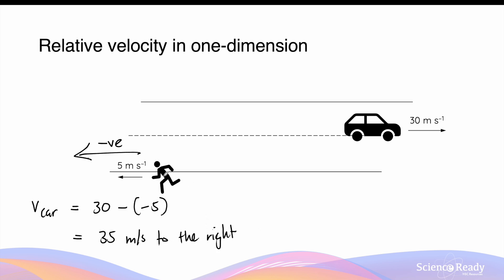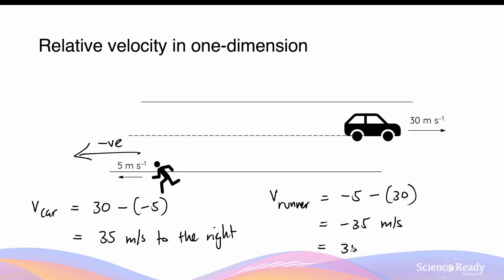In other words, when the runner is running in the opposite direction to the car's motion, the car will appear to be travelling faster at 35 meters per second to the right. Conversely, the velocity of the runner relative to the car will be its velocity, which is minus 5 meters per second, minus the velocity of the car, which is 30 meters per second. This gives us minus 35 meters per second, equivalent to 35 meters per second to the left. So from the perspective of the car, the runner also appears to go faster to the left at 35 meters per second.